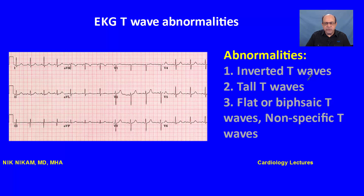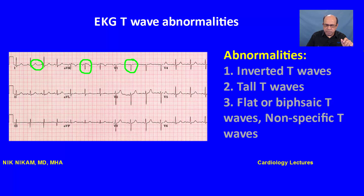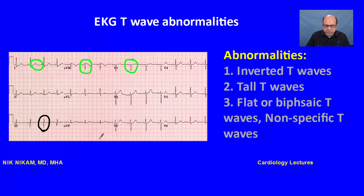Before we go any further, I would like to review the normal T wave appearance on a 12-lead electrocardiogram. Generally the T waves should have a smooth upstroke and a smooth downstroke, as we see in leads 1, 2, AVL, and V2 to V6. All these leads must have a beautiful smooth upstroke and downstroke, except for AVR where the T wave may be inverted, and also V1 where the T wave may be slightly inverted. Lead 3 is a little different — it could have a flat, upright, or inverted T wave.